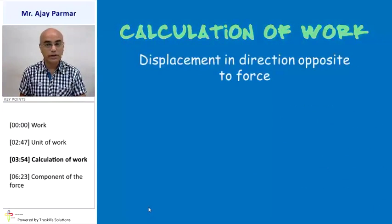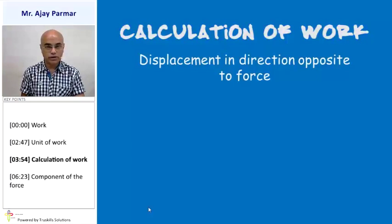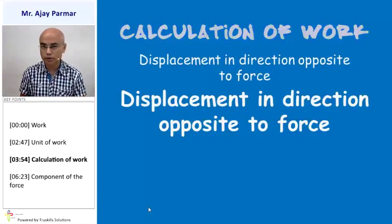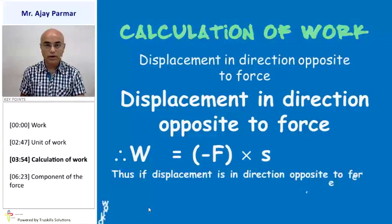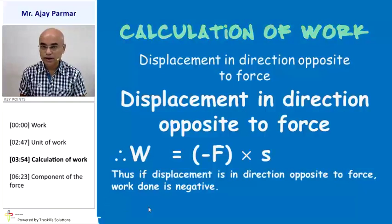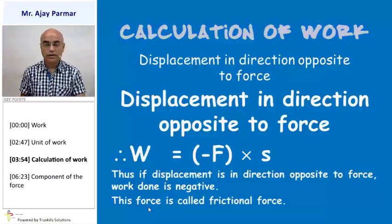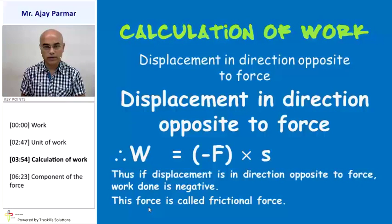If the displacement is exactly in the direction opposite to that of the force, the force in this condition would be frictional force — that means displacement is opposite to the direction of force. So W = −F × S, and the work done will be negative. The force acting along this direction is called frictional force.